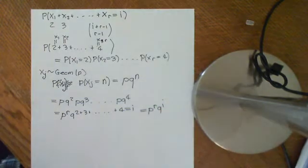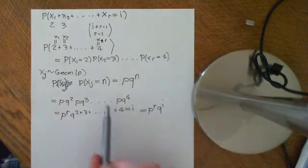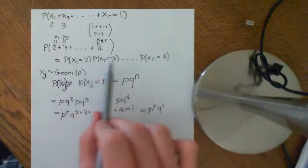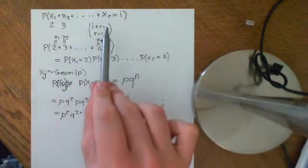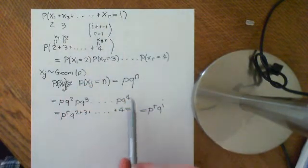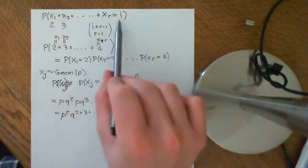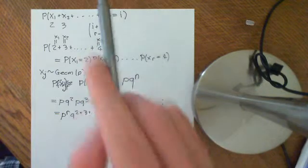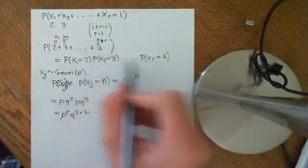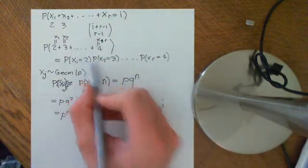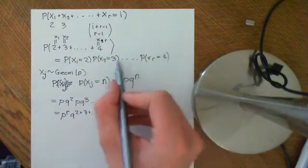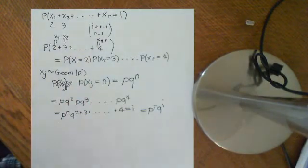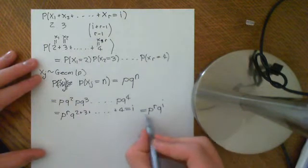But what are all of these going to add up to? They are going to add up to i. So we're going to get that it's p to the r, q to the i. And what's the importance of that? That we get that it does not matter, the probability that this happens did not matter how you distributed the biscuits. It was absolutely equal, no matter how, the probability was independent of how you actually distributed these i things to these r random variables. So it did not matter that it was 2, 3, 4. We could have distributed it however we wanted. As long as they all added up to i, the probability of it happening is the same, and it's given by this formula here.